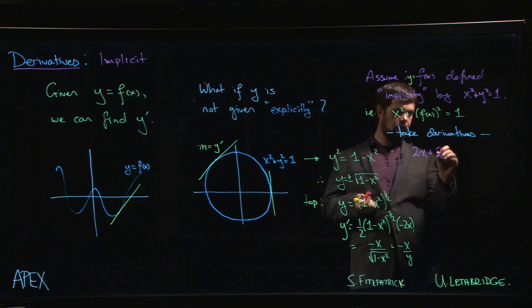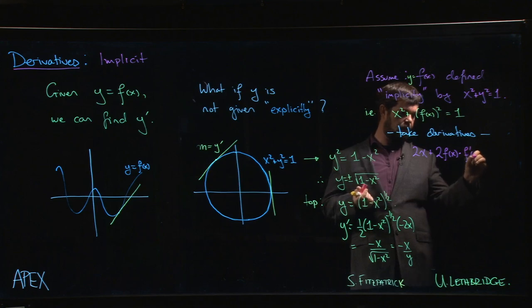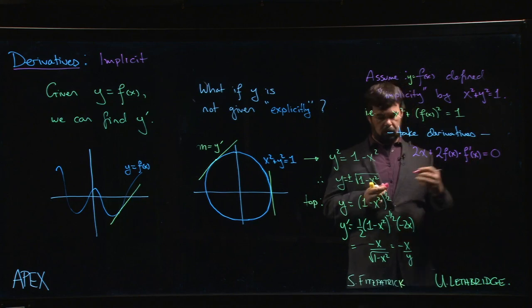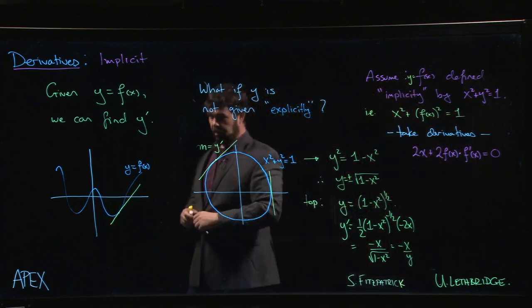We're going to get 2 times f of x to the first power, so we just write f of x, but then we got to multiply by the derivative of what's inside. The chain rule tells us that this is necessary. So 2x plus 2 f of x times f prime of x is equal to the derivative of 1, which is 0. Two functions are equal, their derivatives should be equal.